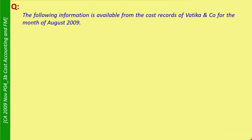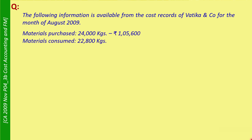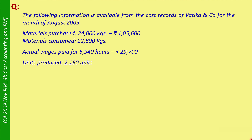The following information is available from the cost records of Vardiga and Company for the month of August 2009. Materials purchased: 24,000 kilograms, total value Rs. 1,56,000. Materials consumed: 22,800 kilograms. Actual wages paid for 5,940 hours, total wages paid Rs. 29,700. Units produced: 2,160 units.